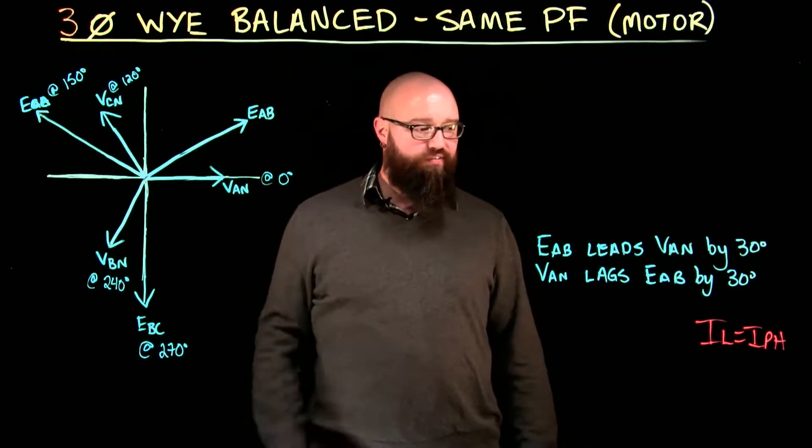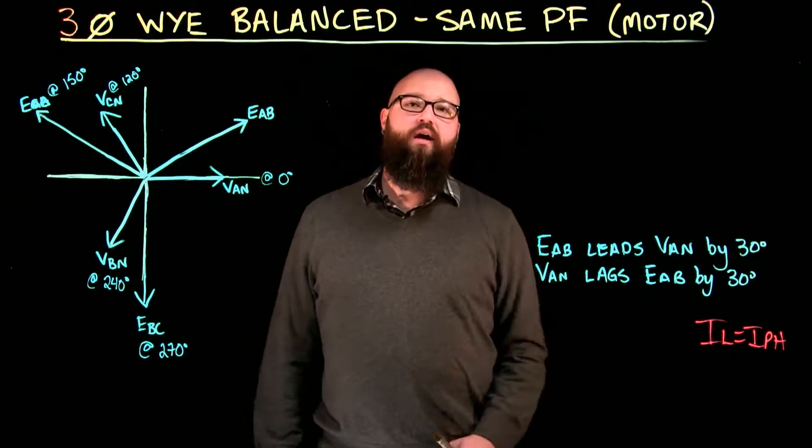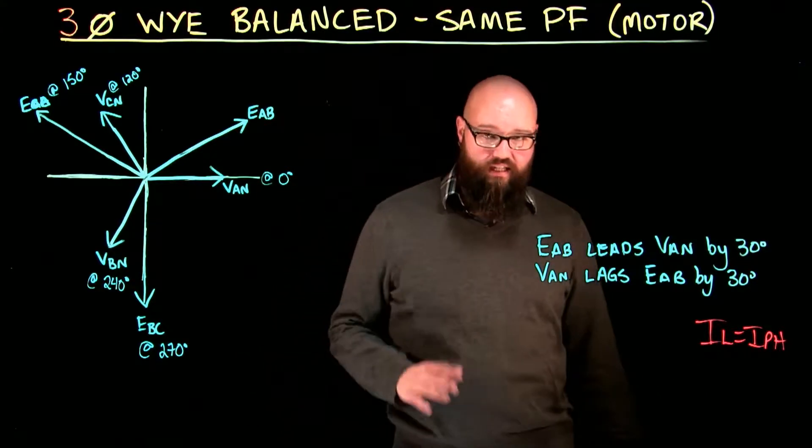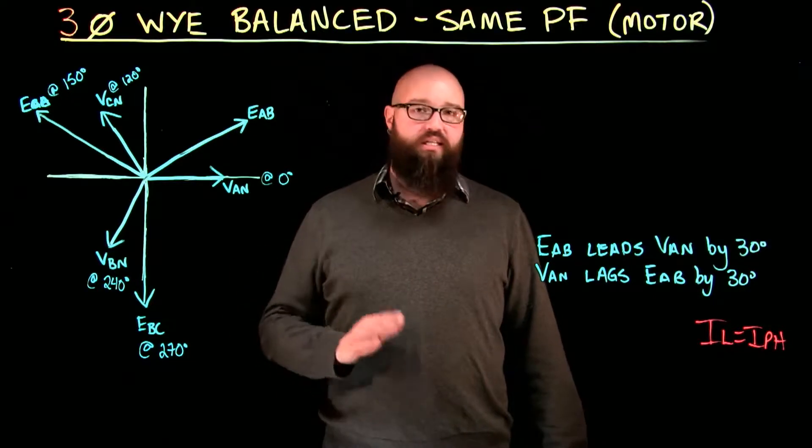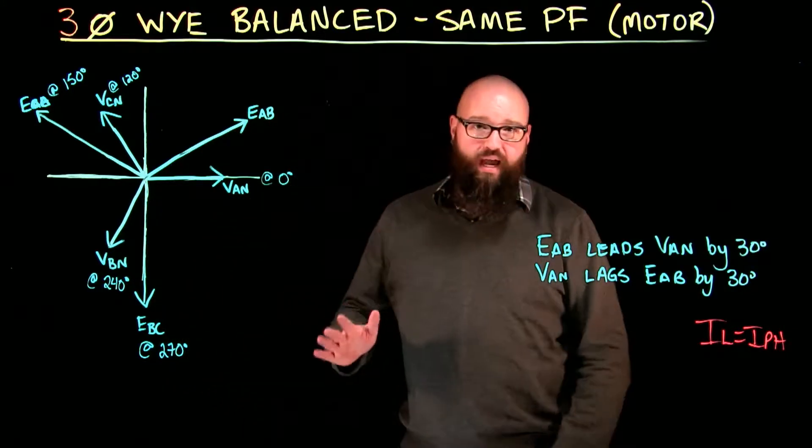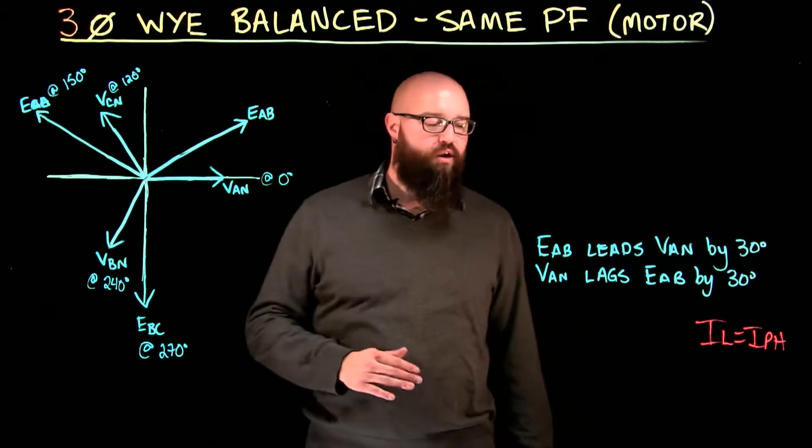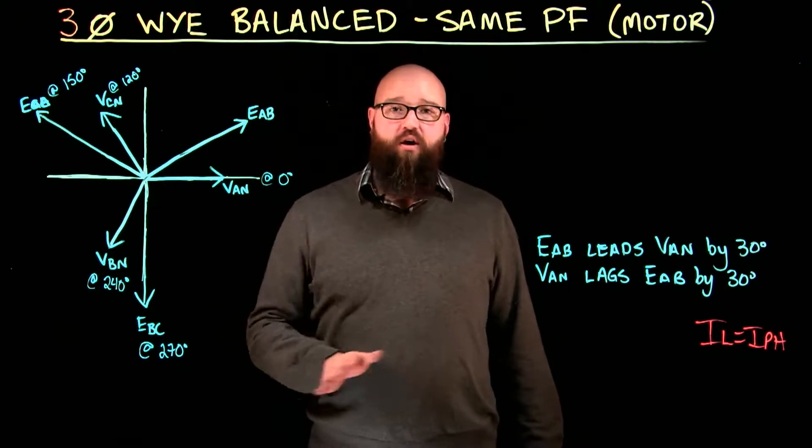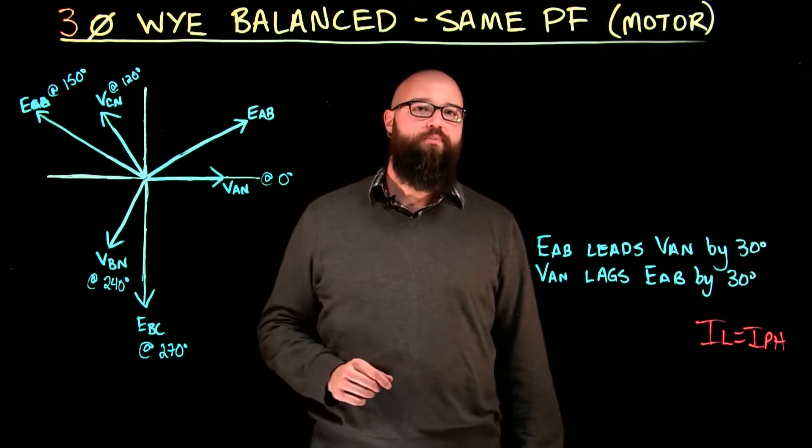The other thing that I've left up here as well, because we are in a Y connected circuit again, I line is equal to I phase. That does not change when we move from balanced to unbalanced. It's still the same. So, we want to take a look at the line currents. I'm not going to go in and do the math in this video. We can go through and make an HV chart on our own, but for now, I just want to take a look at these relationships.